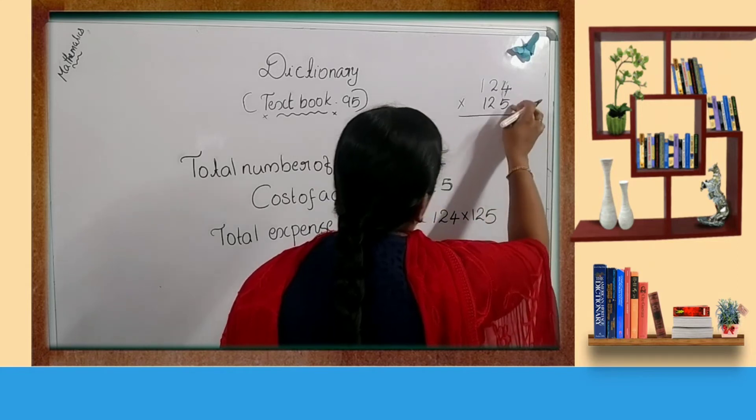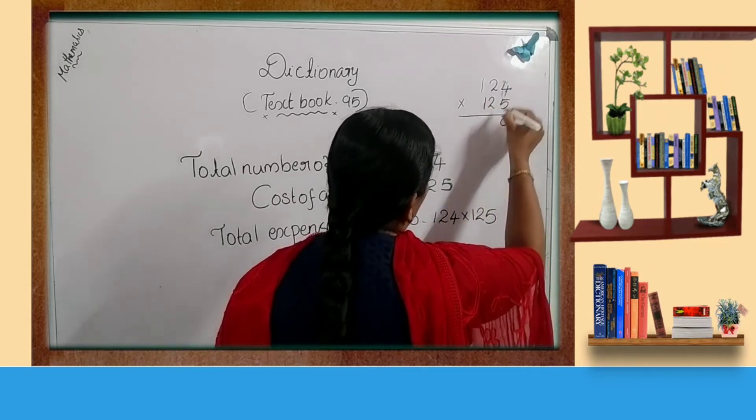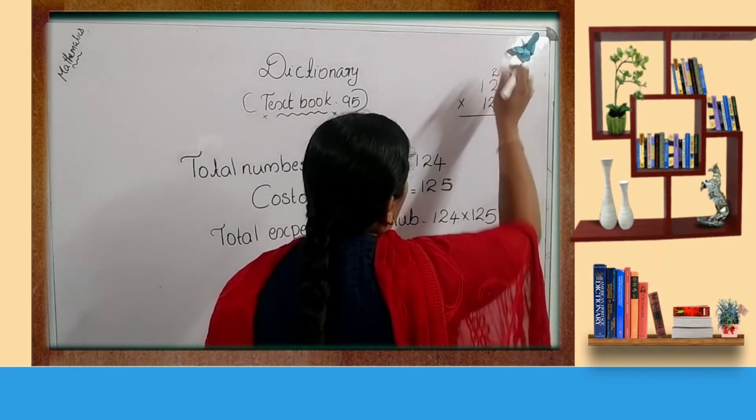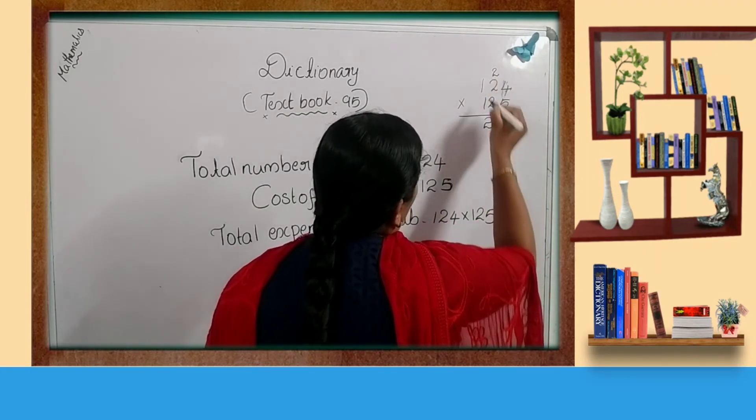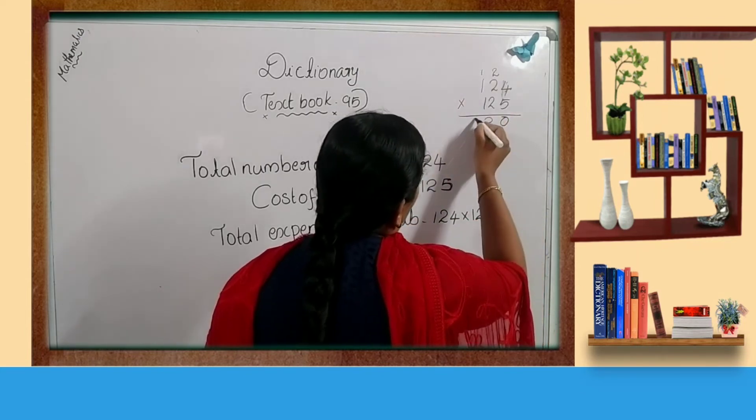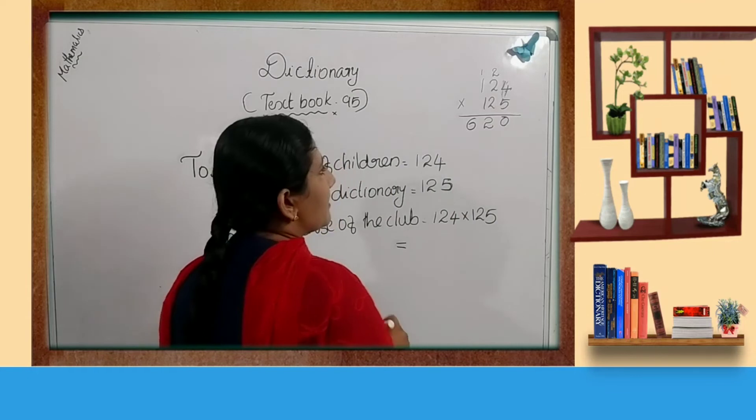First, 5 fours are 20, 2 carry over. 5 twos are 10, 10 plus 2 is 12, 1 carry over. 1 fives are 5, 5 plus 1 is 6. Next step.